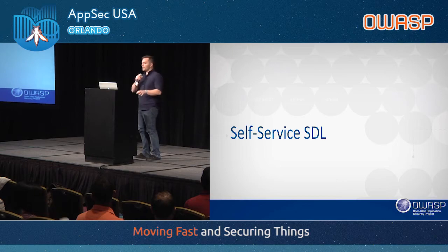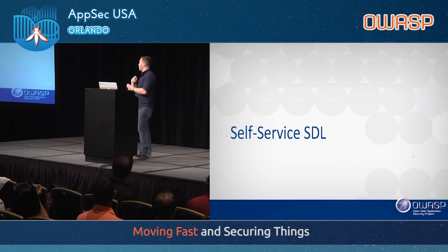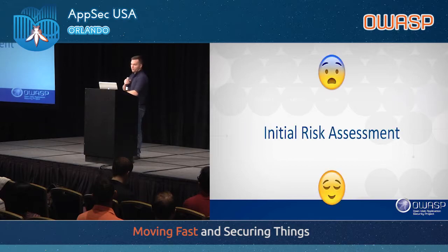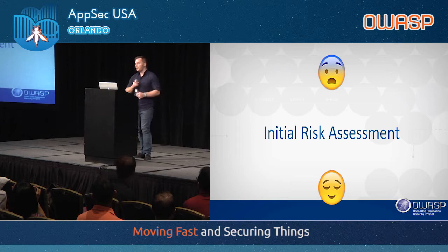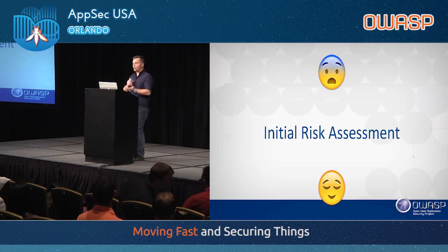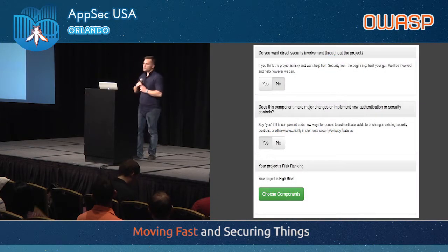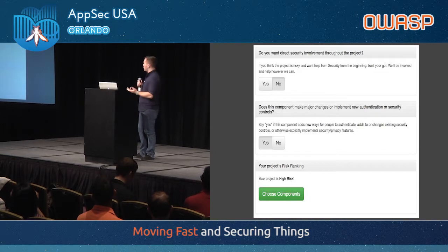The self-service SDL is the tool that brings it all together. It allows developers to produce at high output with very low friction. It enables us to scale a rapidly growing engineering organization while still remaining only three people. It begins with the initial risk assessment — it allows developers to self-evaluate their feature or product's own risk before it even reaches the security team. Developers know their code best. They know if their code will have a high impact, such as if it touches an authentication framework. We'll be able to get that risk rating back and see how severe it will be.